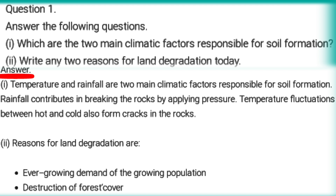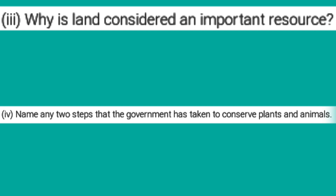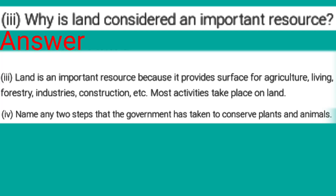Second: Write any two reasons for land degradation today. Answer: The reasons for land degradation are ever-growing demands of population and destruction of forest. Third: Why is land considered an important resource? Land is an important resource because it provides surface for agriculture, living, forests, industries, construction, etc. Most activities take place on land.